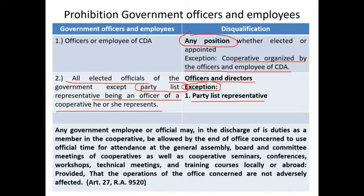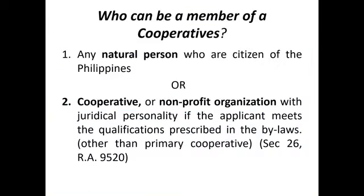Any government employee or official, in the discharge of his duties as a member of a cooperative, shall be allowed by the head of office to use official time for attendance at the general assembly, board, and committee meetings of cooperatives, as well as cooperative seminars, conferences, workshops, technical meetings, and training courses locally or abroad, provided that the operations of the office concerned are not adversely affected. Now, who can be a member of a cooperative? In a primary cooperative, of course it must be natural persons.